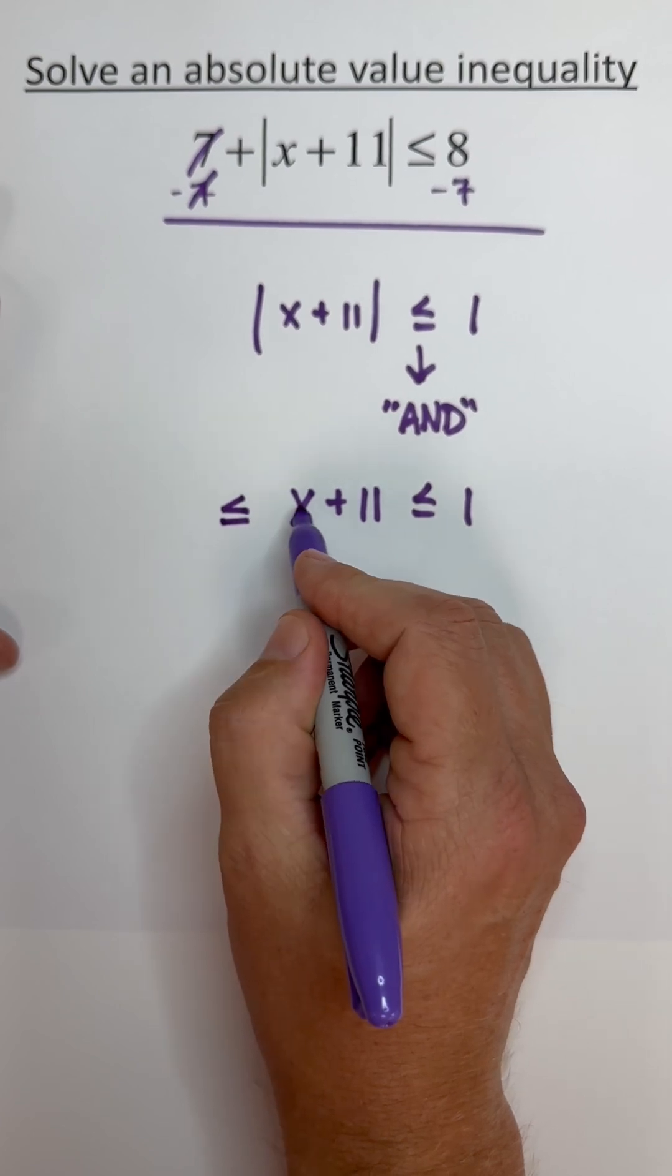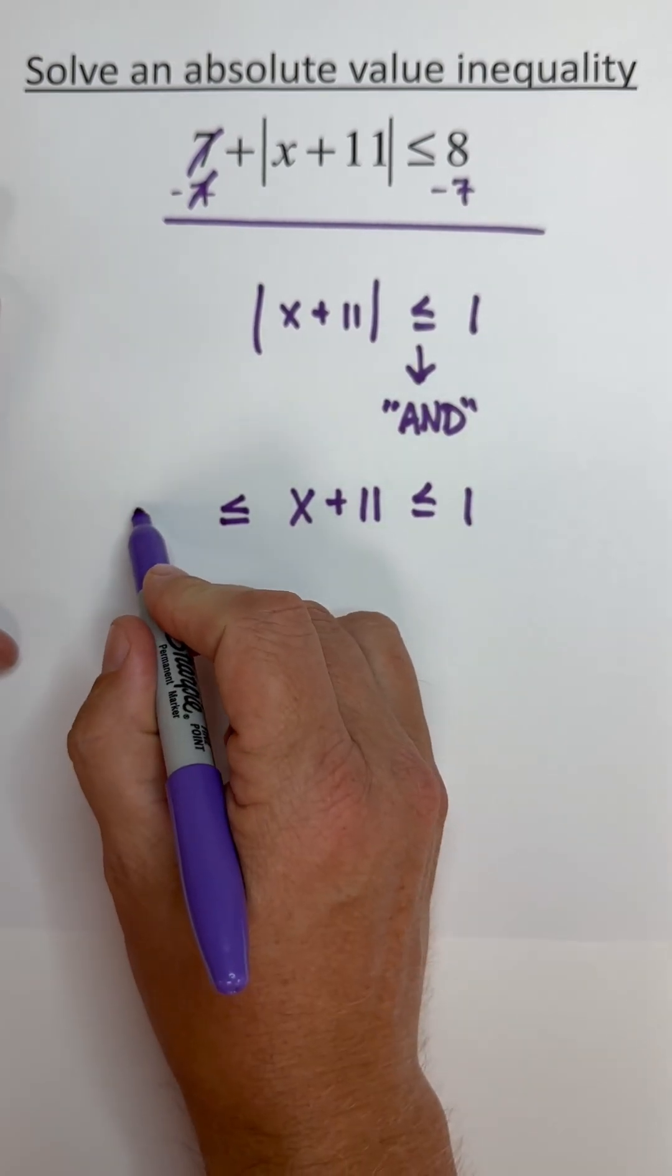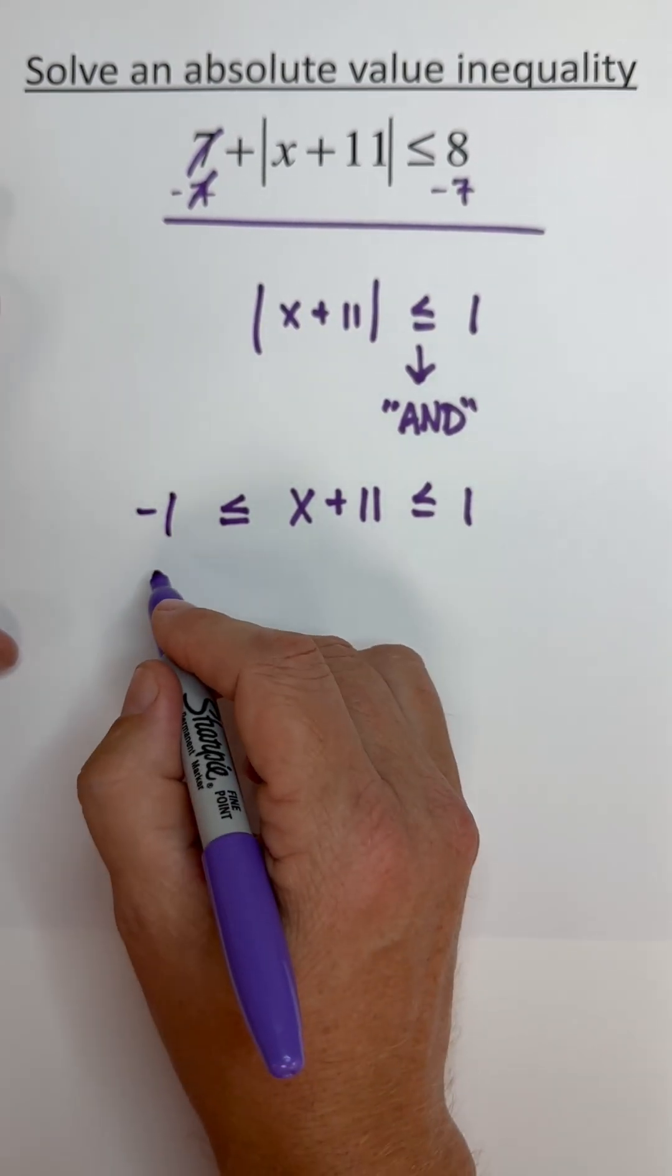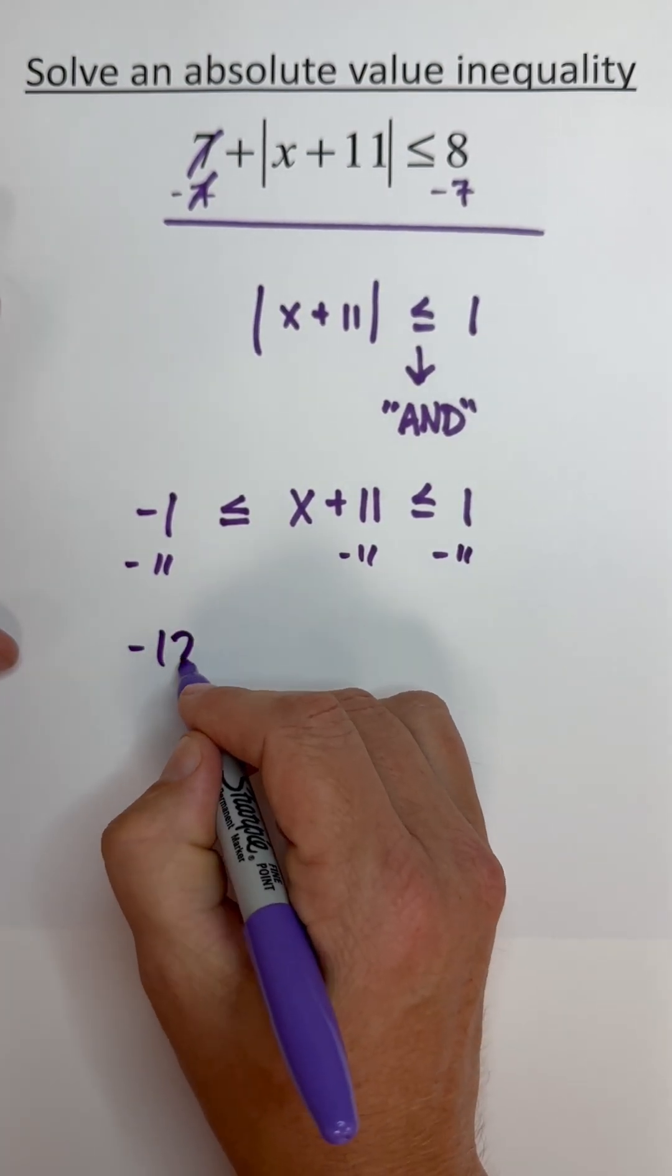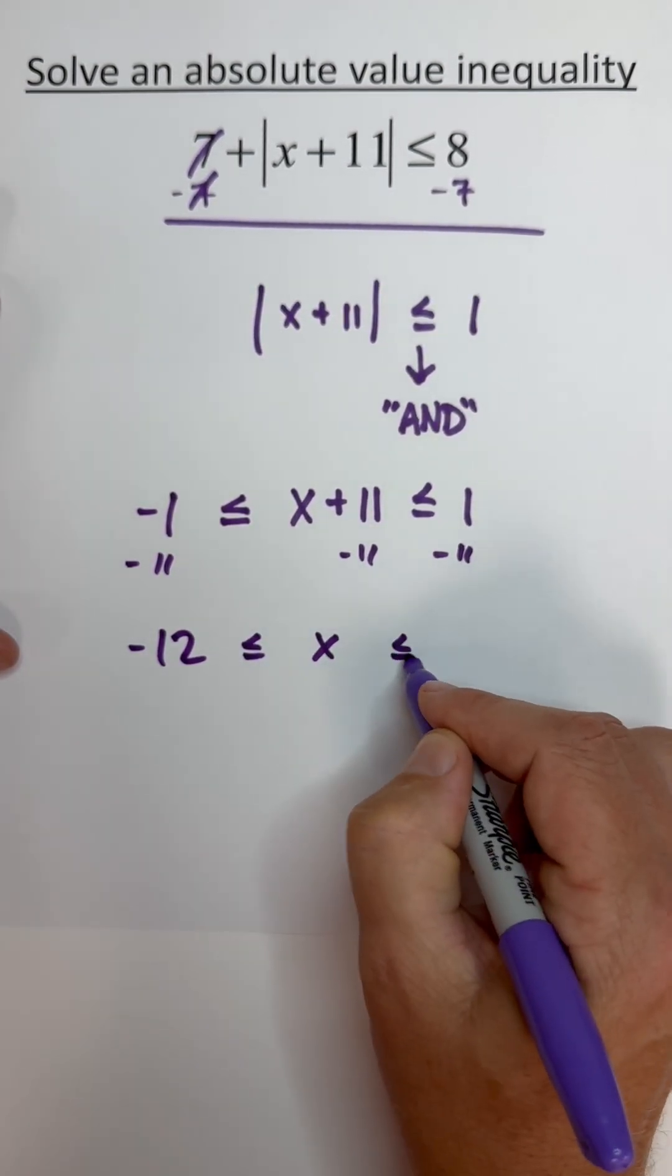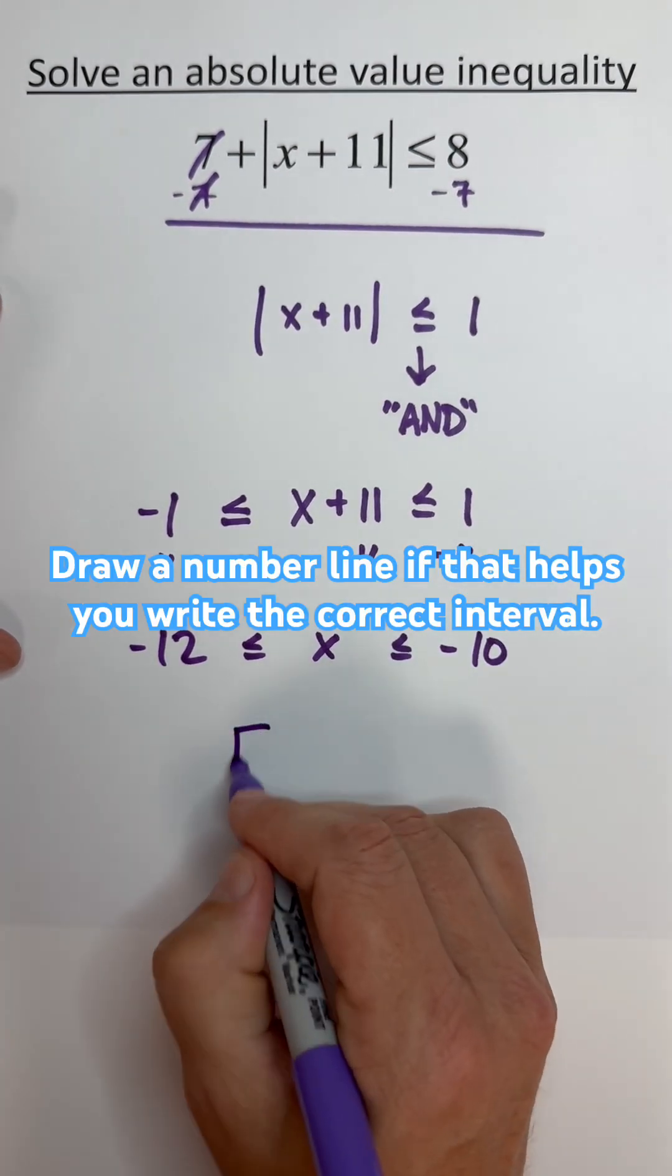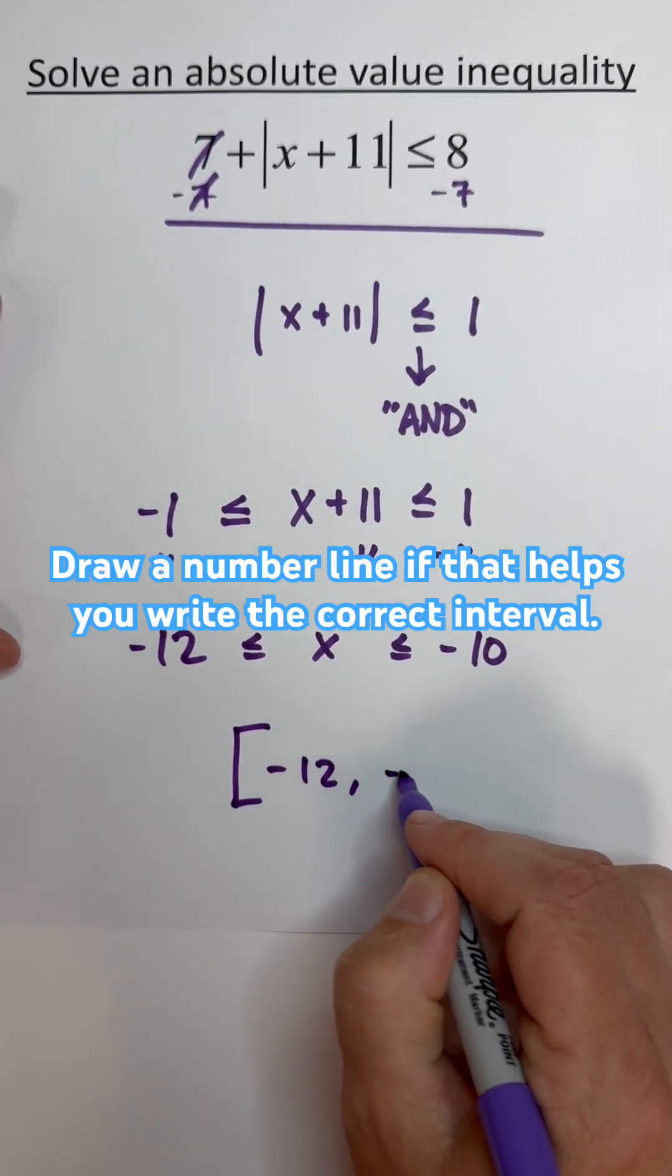Now we just solve by subtracting 11 from all parts, so we get negative 12 is less than or equal to x is less than or equal to negative 10. The solution is negative 12 to negative 10.